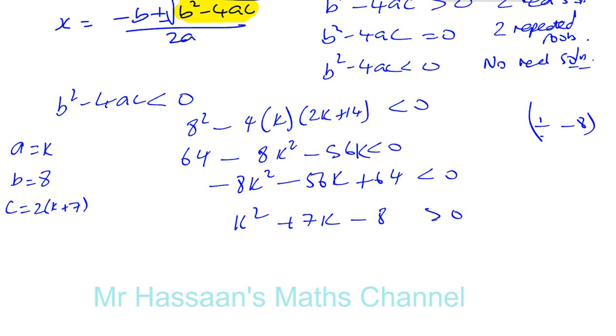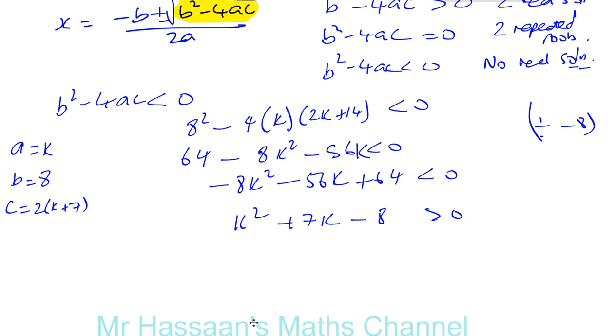We want to solve this inequality. To solve this inequality, we need to find first the critical values. So first we're going to find out where it equals 0. So k squared plus 7k minus 8 is equal to 0.